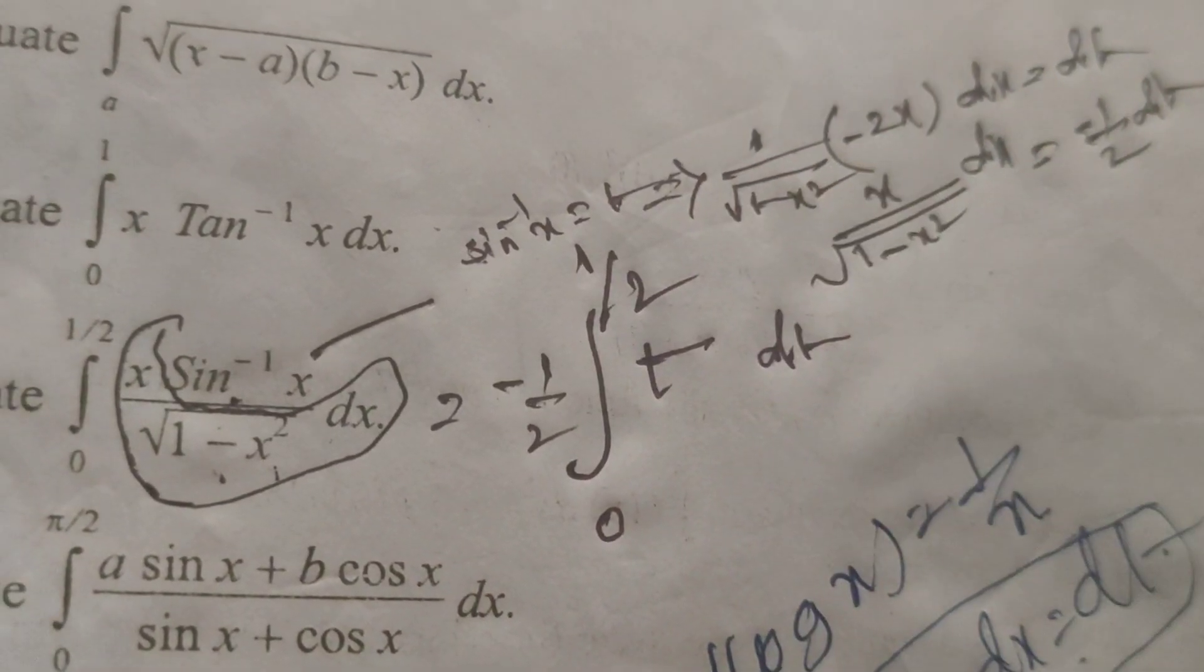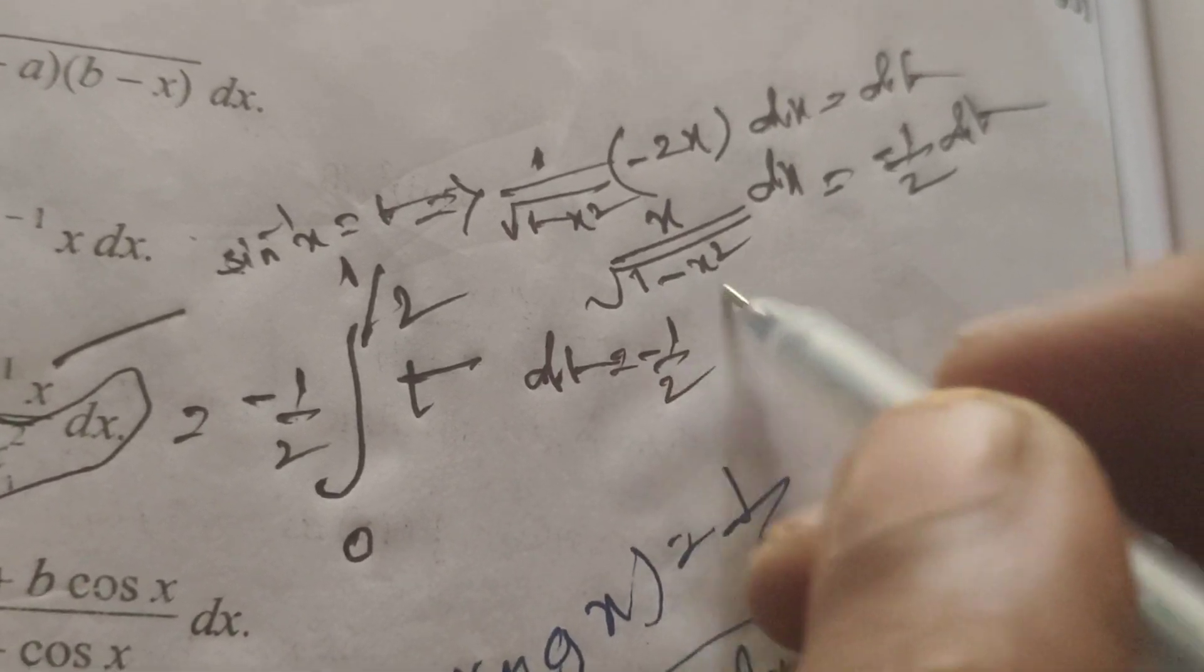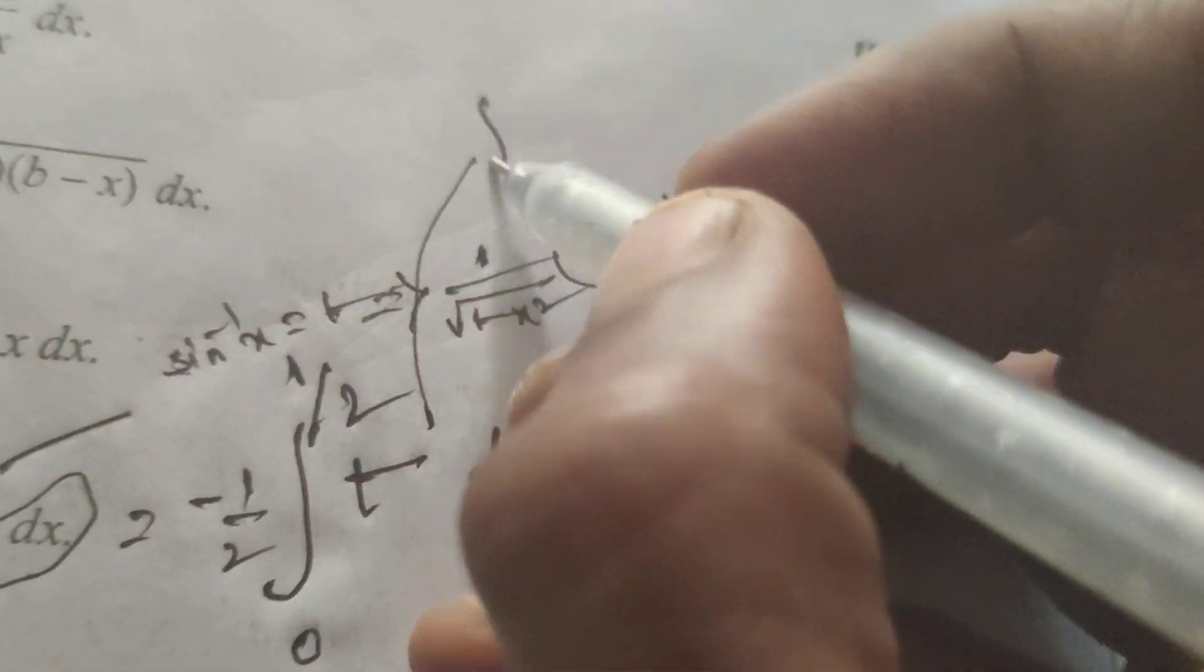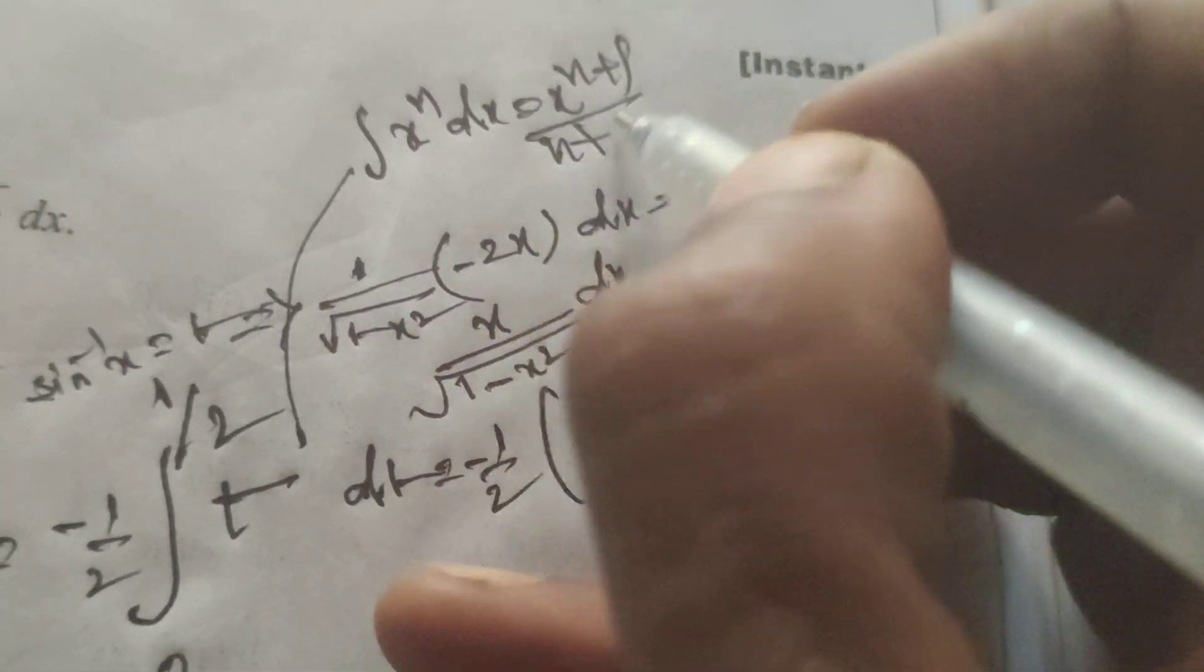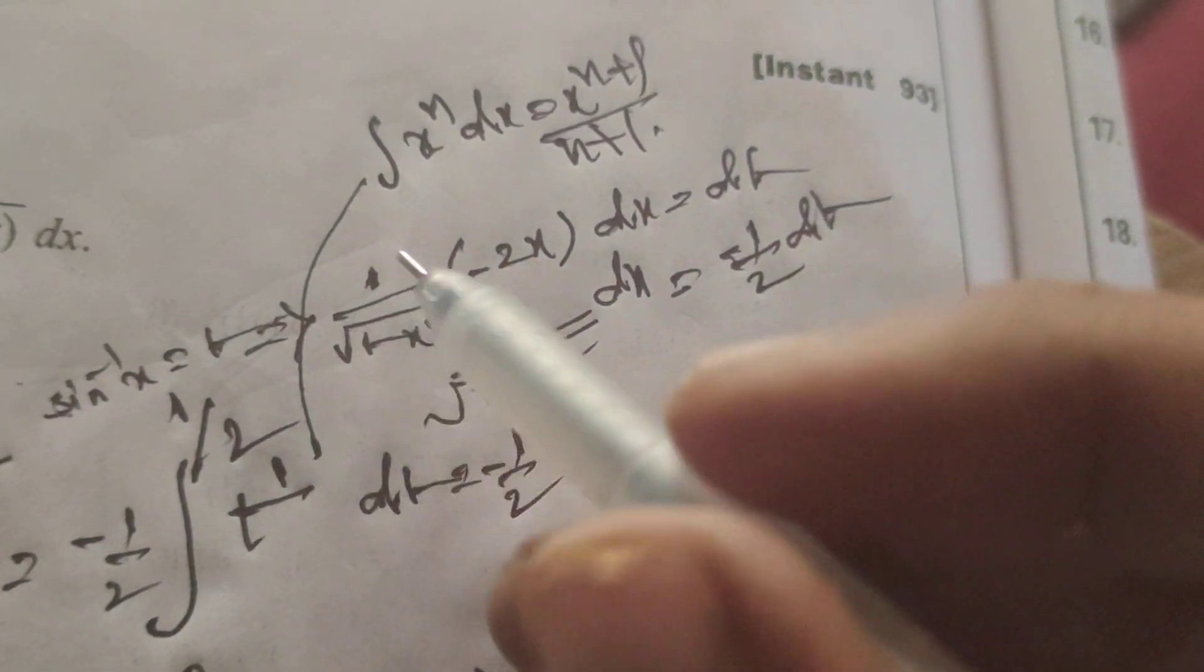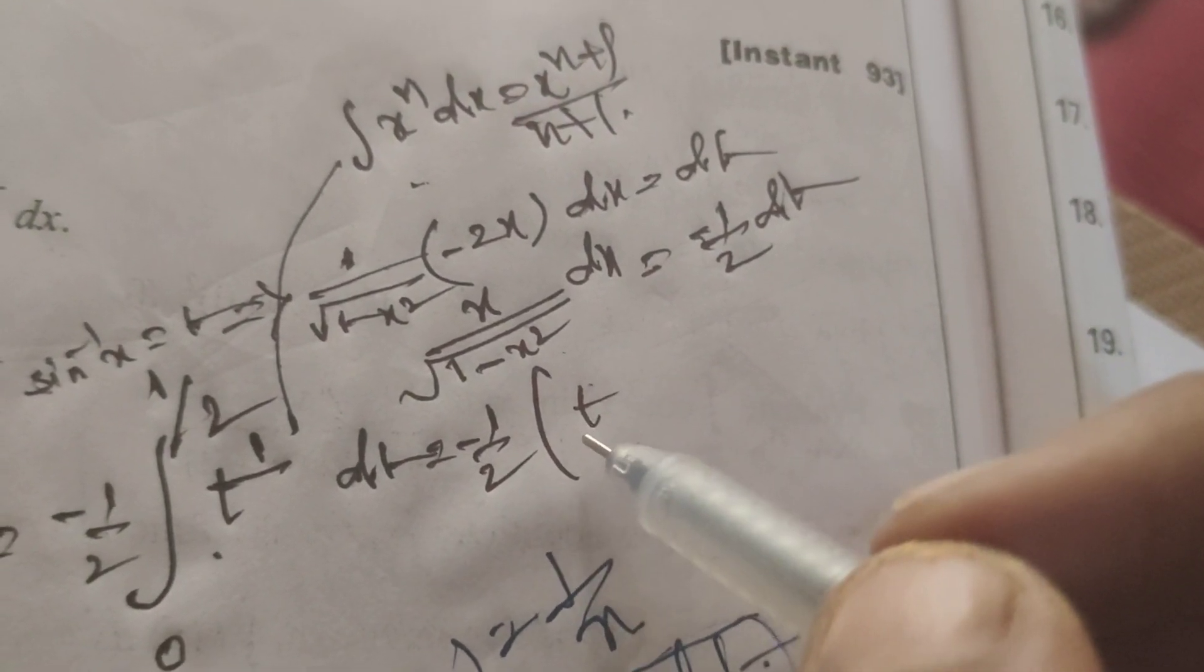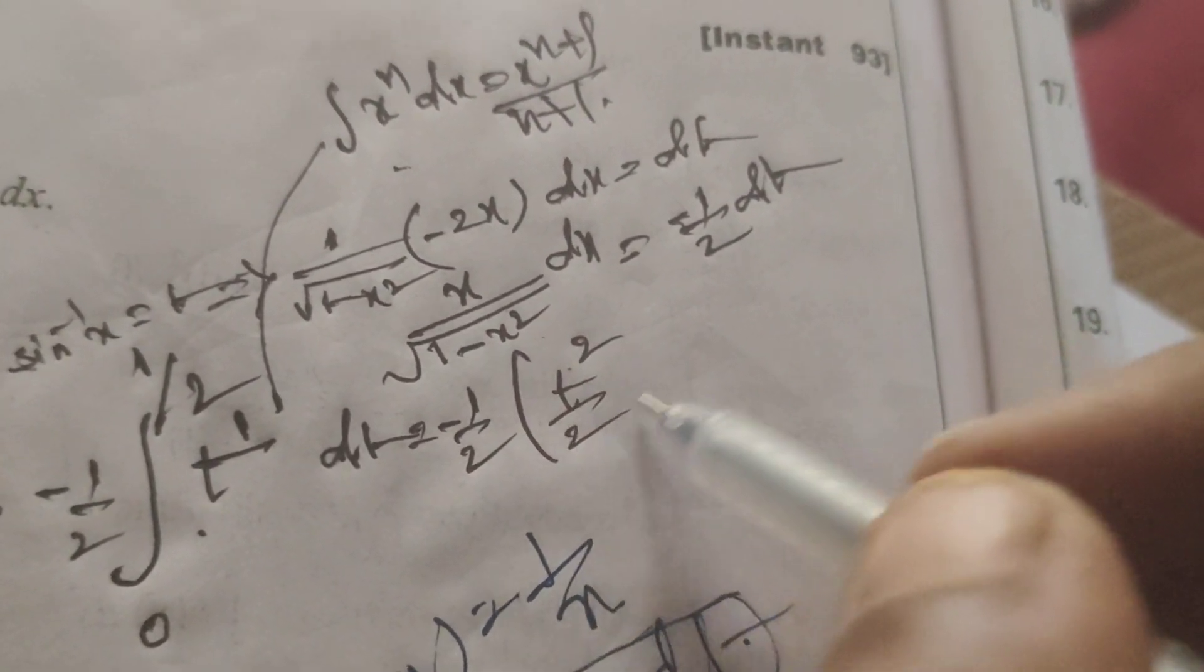Now integrate this: minus 1 by 2 into t power 1. The integral of x power n dx is x power n plus 1 by n plus 1. Using this formula, here n equals 1 and x equals t, so we get t power 2 by 2.